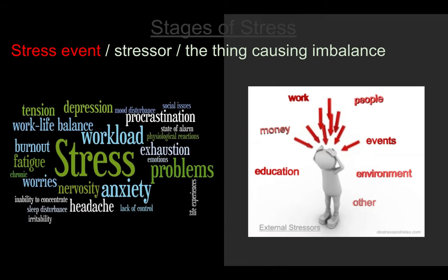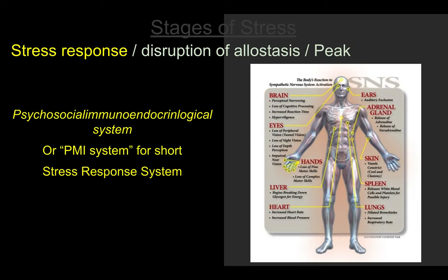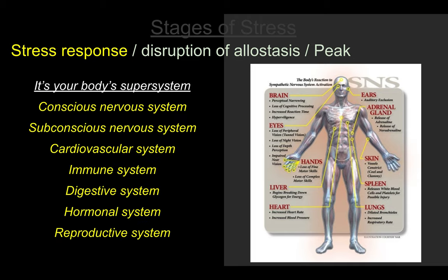So the stress event, the stressor, remember, are the things causing imbalance. A stress response is a disruption of allostasis. In other words, the stress response is a response to an imbalance in homeostasis. Allostasis brings us right back in to a sense of balance. Again, the psychoneuroimmunendocrinological system, PNEI system, is basically the stress response system. It's a system of many, many things going on. Your conscious nervous system, your subconscious nervous system, your cardiovascular system, your heart, your immune system, your digestive system, your tummy, your hormonal system, your reproductive, all of it, all of it starts happening at the exact same time when you have a stress response.